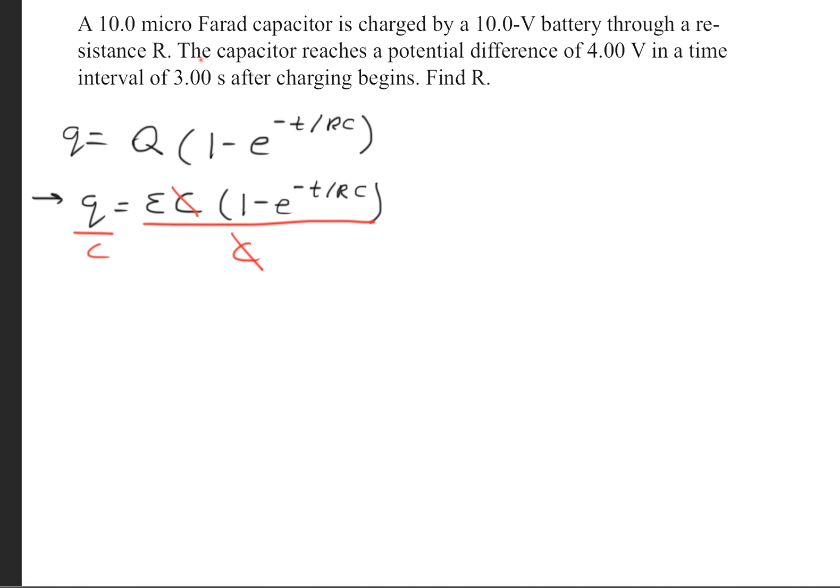What we'll do now is divide the capacitance on both sides. Note that little Q over C is equivalent to delta V, so we'll make a substitution here. So Q over C becomes delta V, and the EMF we'll just write as the initial voltage.